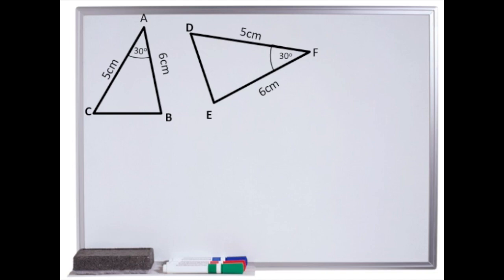Here we have two triangles. Let's try and prove that they are the same. Can you see that they are the same? Well, yes, you can because we can see that the line AC is the same as DF. They are both 5 centimetres. You can also see that the line AB is equal to EF. They are both 6 centimetres.